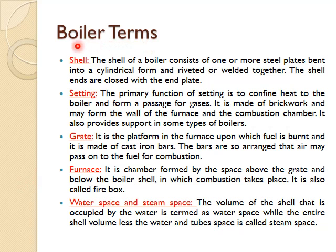Here are some important boiler terms which we need to understand before we go for the discussion of different types of boilers. The shell of a boiler consists of one or more steel plates bent into a cylindrical form and riveted or welded together. The shell ends are closed with end plates.